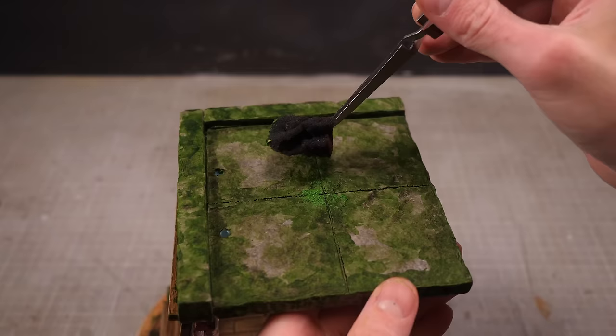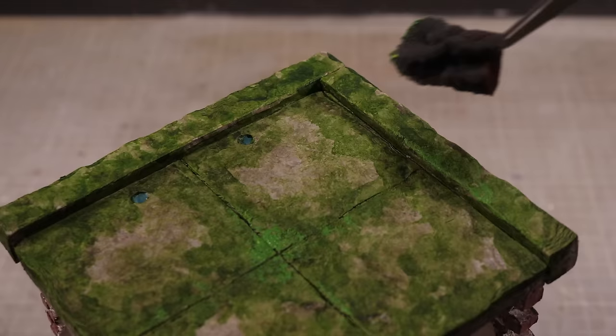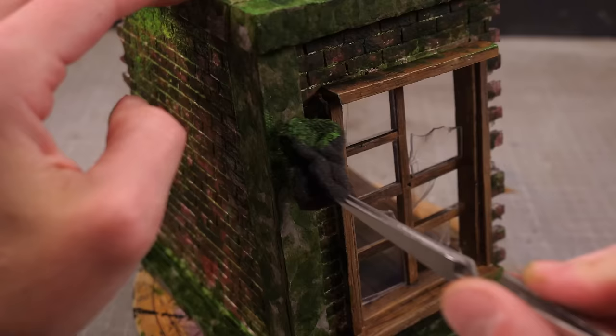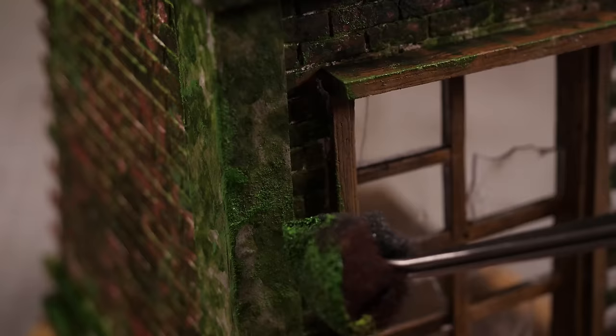As it dries it creates a terrific looking natural mossy discoloration but it's a bit too flat so I've mixed up some dark green ink into some modeling paste that I can apply with a sponge to create a bit of texture as well.